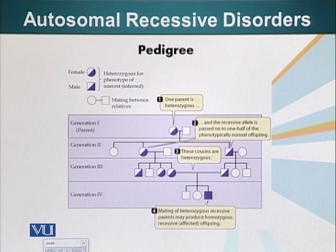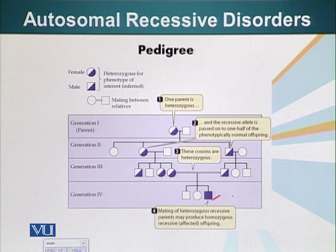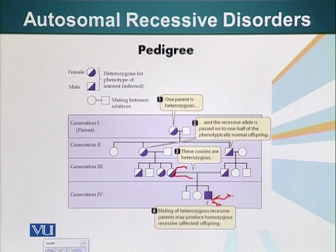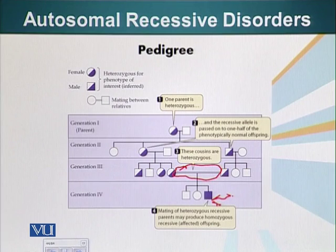Here we have a pedigree of an autosomal recessive disorder. As you can see, the affected individual is shown here. The parents are normal; however, they are carrying the defective allele but are themselves normal. Here, consanguineous marriage is shown by a double line, indicating this mating is between two cousins. This is an example of an autosomal recessive disorder — you can contrast this pedigree with one showing an autosomal dominant disorder.